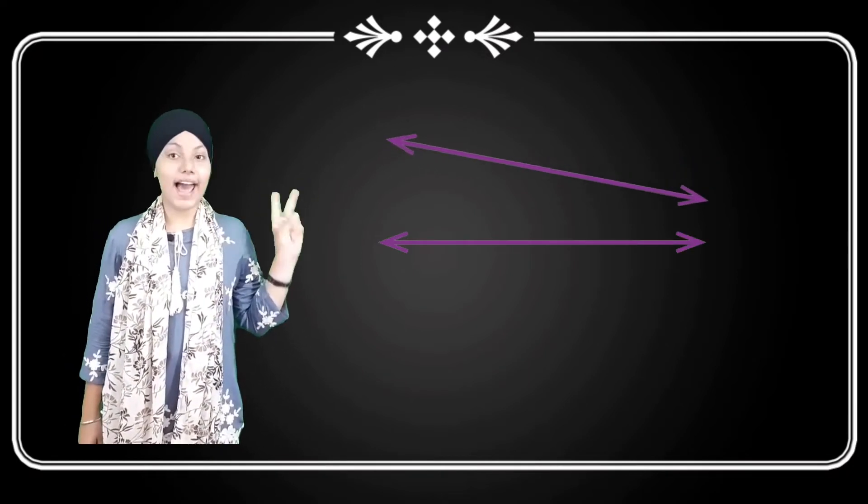Now, we will talk about intersecting lines. See, we have two lines A and B.